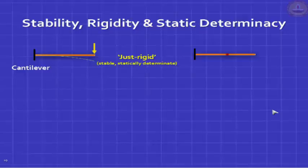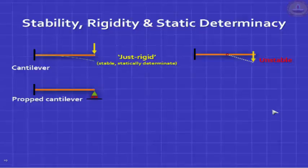If I put one internal hinge on this cantilever, the part beyond the internal hinge becomes unstable — by its own weight it will go down. Now instead of a hinge, if I put a prop (a roller support) at the free end, it is called a propped cantilever. The difference from a cantilever: you gave an additional support at the free end. We say we made it a little more rigid than the minimum needed for stability — it is over-rigid.